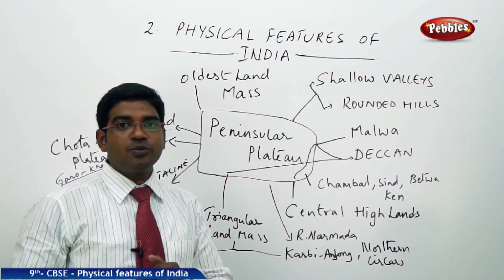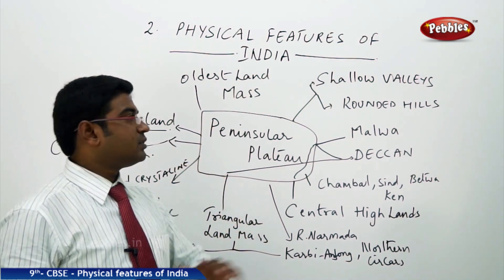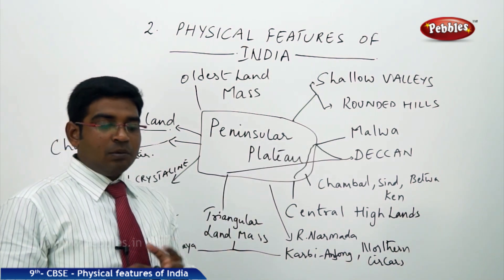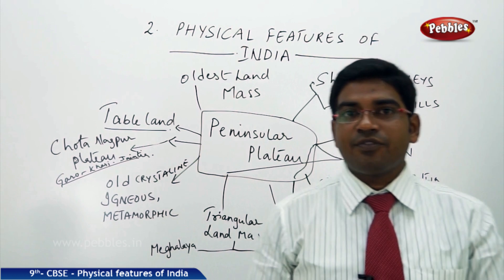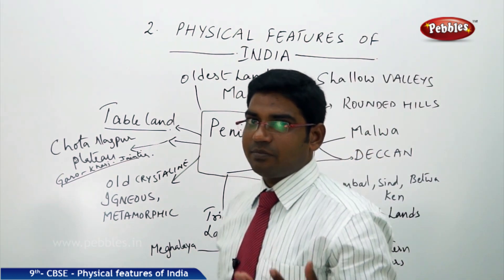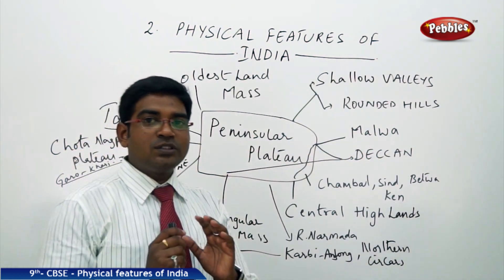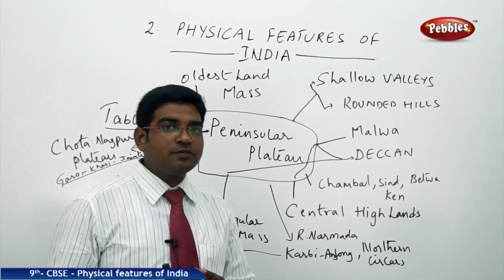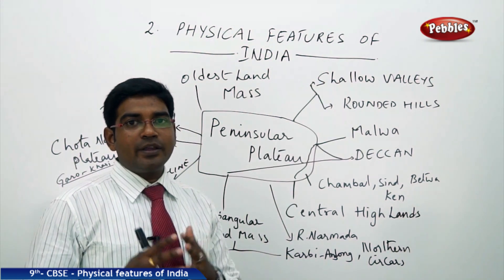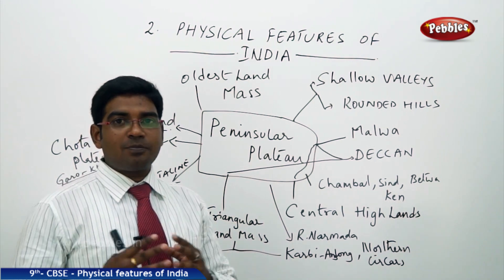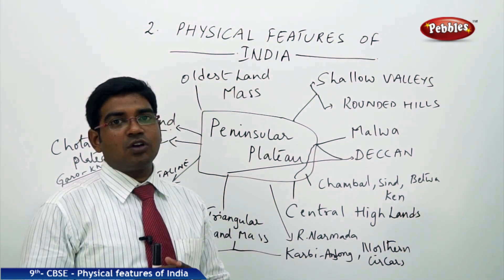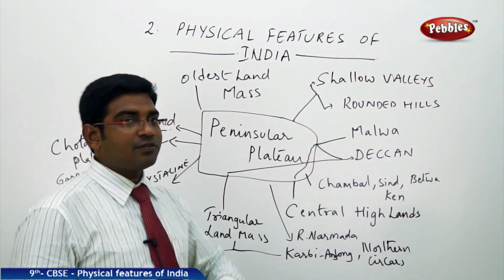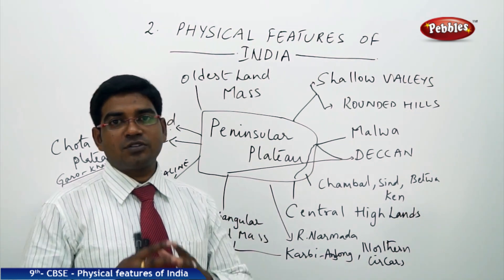The Peninsular Plateau is comprised of shallow valleys and rounded hills. Most places in the Peninsular Plateau have very low depth valleys, and we also find hills which are rounded or circular in shape.